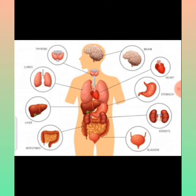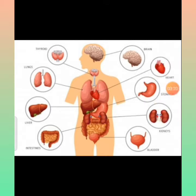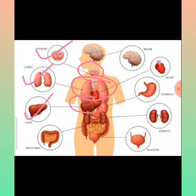Next, let's move to internal organs. What are internal organs? There are many parts in our body that we cannot see — we would not be able to see those organs because they are internal organs. We can see external organs, but we cannot see internal organs. Internal organs include: thyroid, lungs, liver, and intestine.